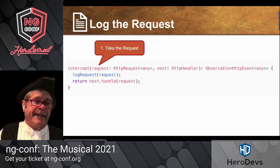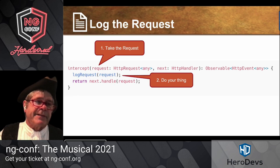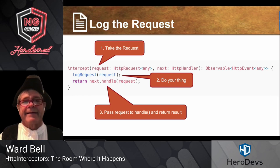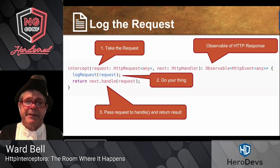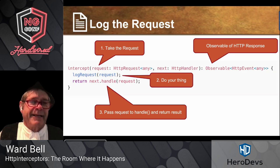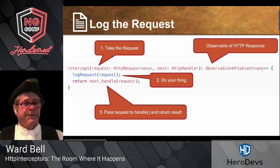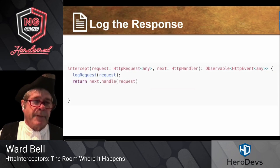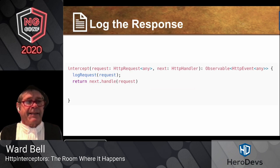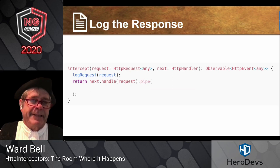Let's take a look: there's the request, then you do your thing with it, then you pass it to the handle method of next, and you return that. That is in fact an observable of HTTP response — it says HTTP event, but 90% of the time it's a response. So that was the going-out part. We logged it — that's the thing we wanted to do with the request. Now, next.handle returned an observable.